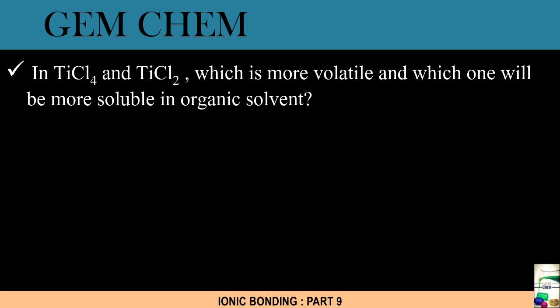Now let us go to the next question. In TiCl4 and TiCl2, which is more volatile (that is which undergoes reaction very fast easily) and which one will be more soluble in organic solvent? If we look into the electronic configuration of titanium, this is [Ar] 3d² 4s². So in TiCl2 it will be titanium 2+ so 2 electrons will be going away from 4s², and if it is TiCl4 then 2 electrons will be going away from d orbital. As a result, the size of Ti⁴⁺ will be small and it will be covalent in nature and more volatile. Thus it will be soluble more in organic solvent.